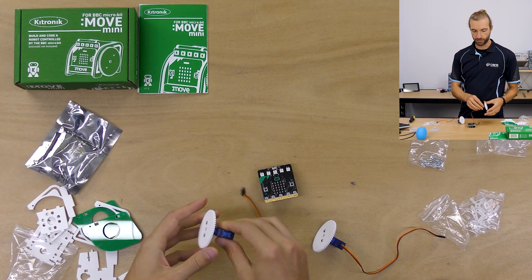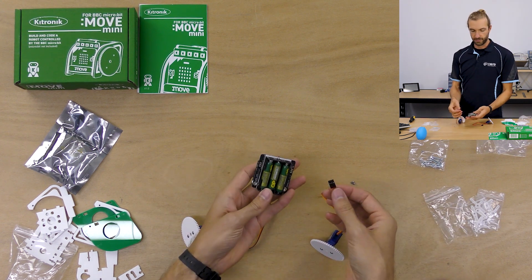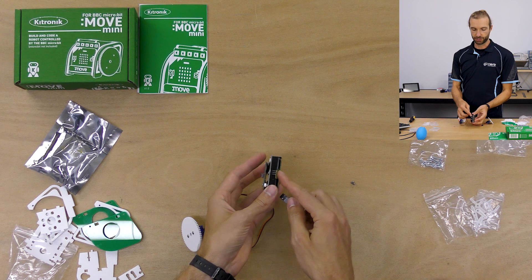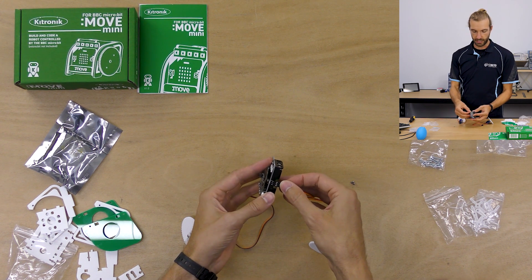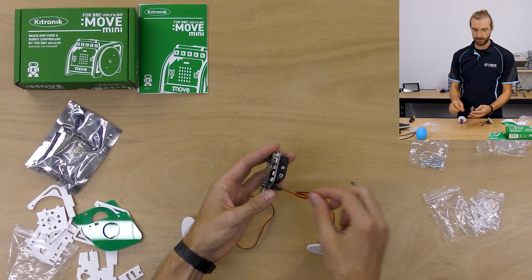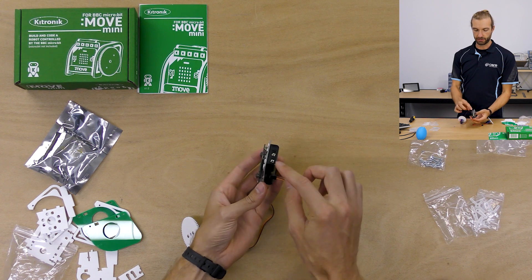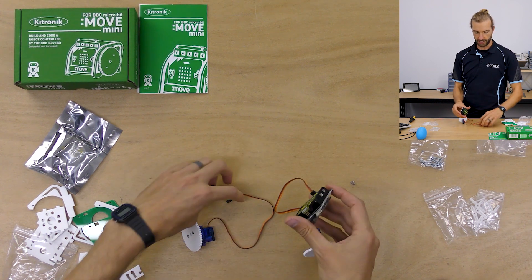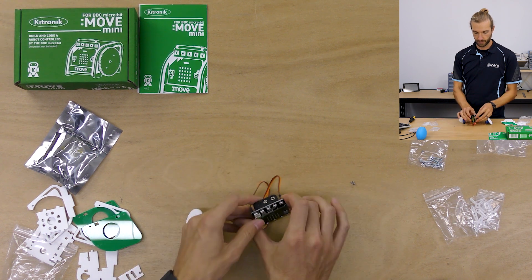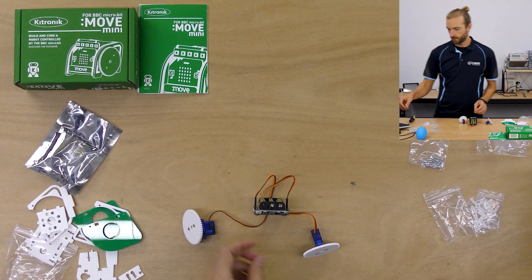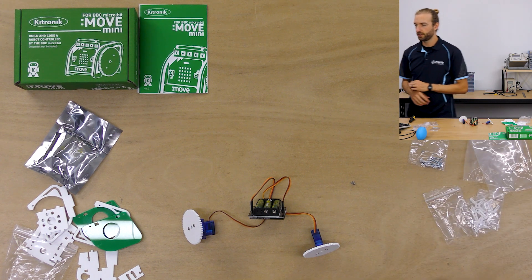We're not going to screw them on at this time because first we need to calibrate our servos. So the servos connect to this three pin connector on the back of the servo light board with the brown wire facing up. If the LED lights are up, then the brown wire will face that side.